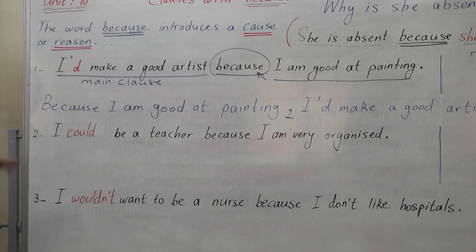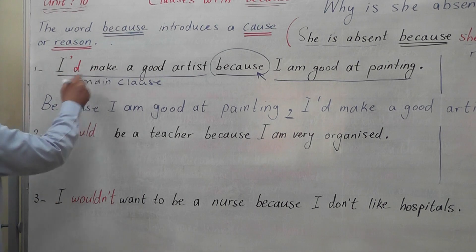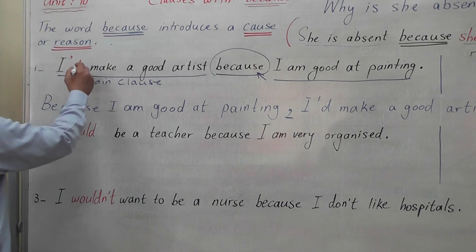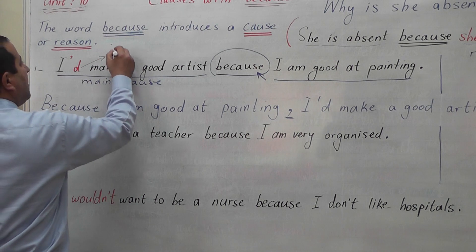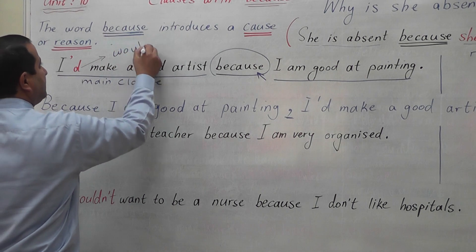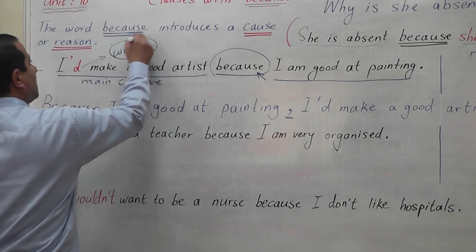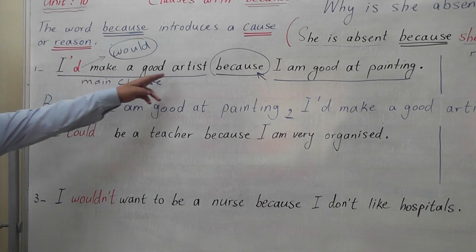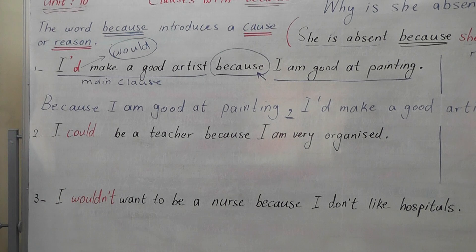When you say 'I'd make a good artist,' 'I'd' is a contracted form of 'I would.' So 'I'd' means 'I would' — 'I'd make a good artist.'